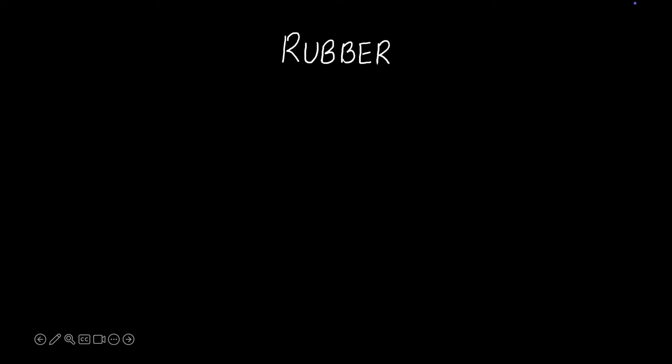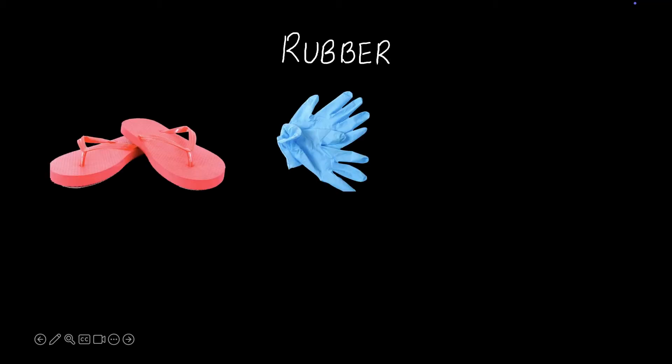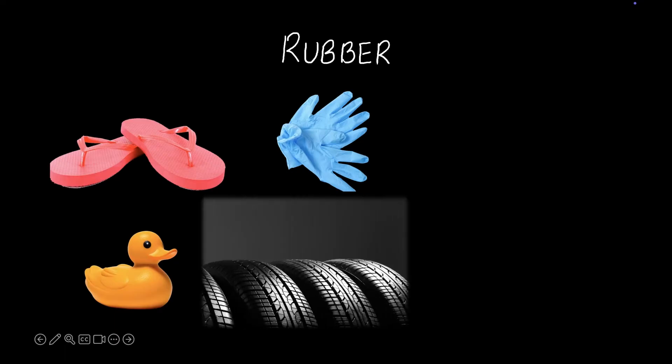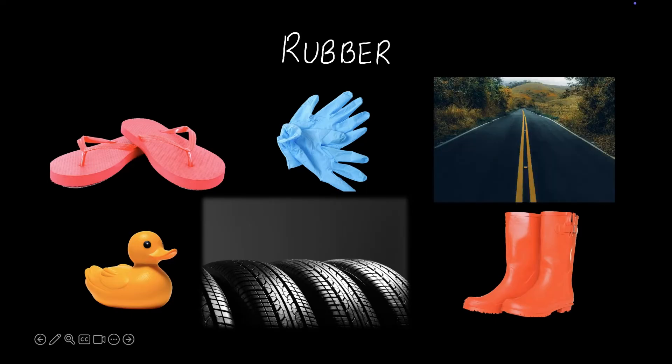In this video we'll be discussing the production of rubber. Rubber is seen all around us, from our slippers or chappals to surgical gloves, toys like a floating duck, tires, boots, the soles of our shoes, and even the road. We see it everywhere. It's really important for our daily modern life. Let's see how it's produced.